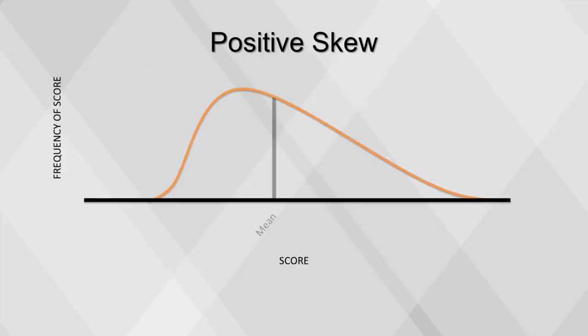For a positively skewed distribution, the right tail is longer as there are outliers with larger numbers. These outliers cause the mean to be greater than the median.